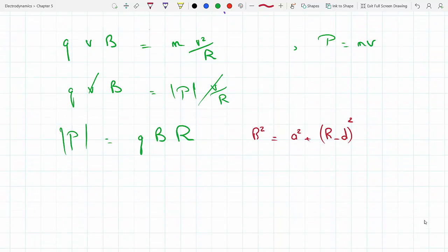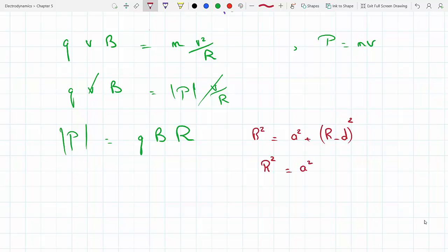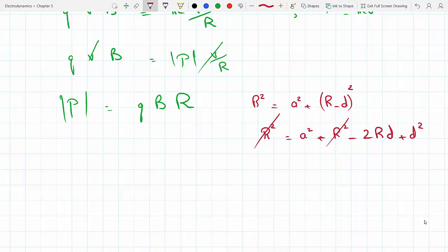So that means r² will have to equal a²—just FOIL this—plus r² minus 2rd plus d². Notice the r² goes away, and we get 2rd equals a² plus d². So r equals (a² + d²)/(2d). Now just plug this here, and we have the momentum in terms of the required quantities.